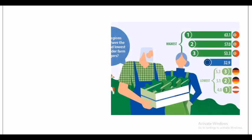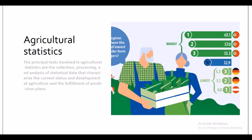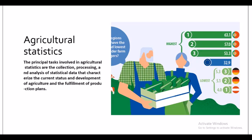Agricultural statistics involves the collection, processing, and analysis of statistical data that characterize the current status and development of agriculture and the fulfillment of production plans.